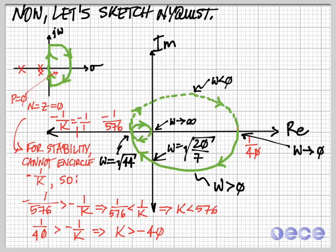And likewise, K has to be greater than minus 40. So that is our stability criterion: minus 40 less than K less than 576. That gives us all the values of K in the real numbers. If we were just looking for K greater than 0, then we would have 0 less than K less than 576, but the problem asks for all K in the real numbers.